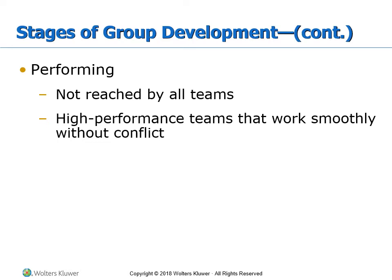The final stage is performing, which is not reached by all groups or teams. Here, high-performance teams work smoothly and without conflict. At the performing stage, everything is optimized — everyone is heard, everyone's ideas are considered, and people can adjust their own input based on others'. This is the optimal level where everything runs smoothly at a high performance level.